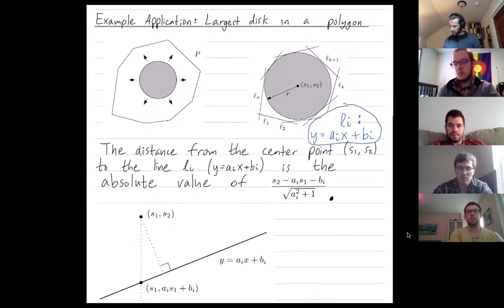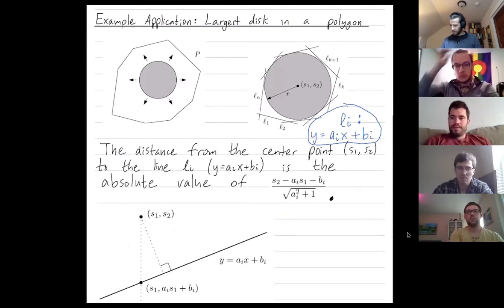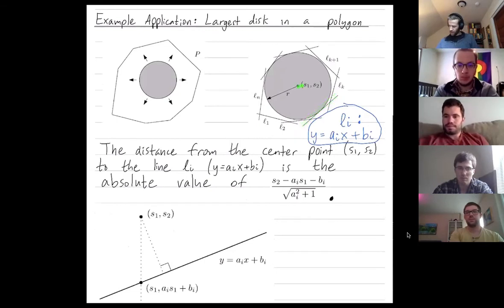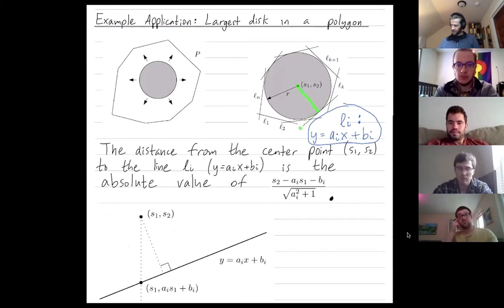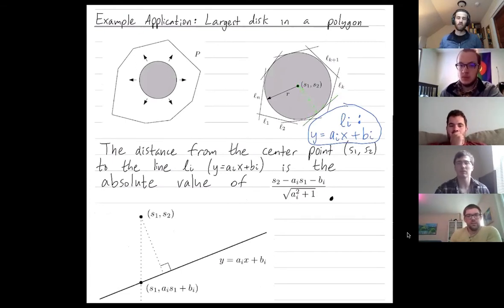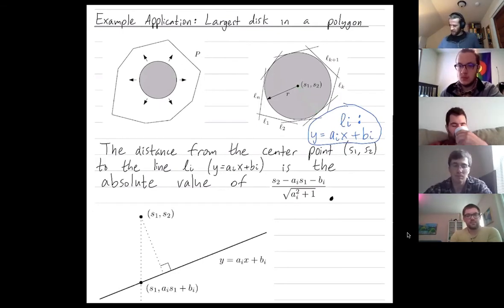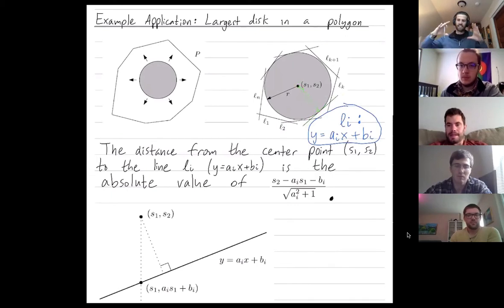So for the moment we're just going to pretend that there's a single line. We're going to find an equation for the distance from any given center to that line. And then once we have an equation for this distance, then we'll be able to put a bound on the radius. The optimal radius will be such that all of these distances are not exceeded. Because if your radius exceeds this distance, then you go outside the polygon.